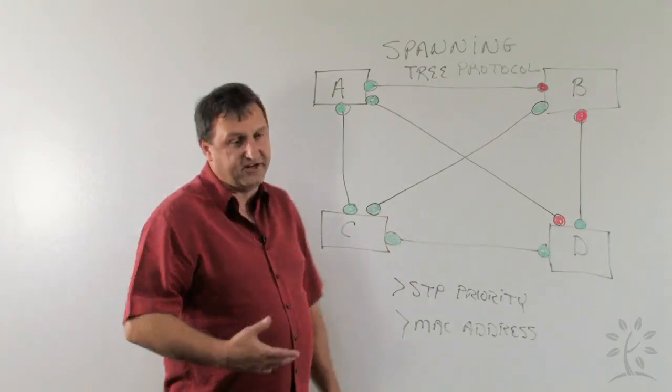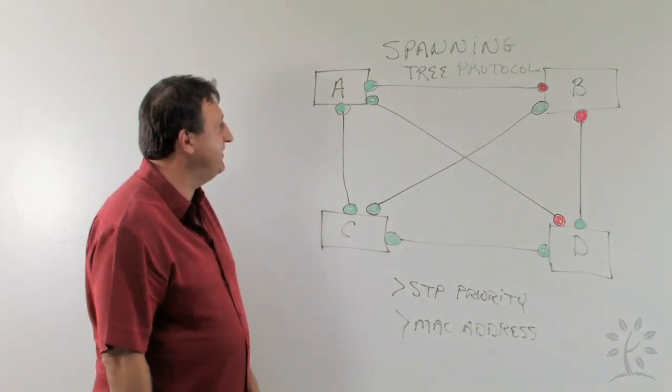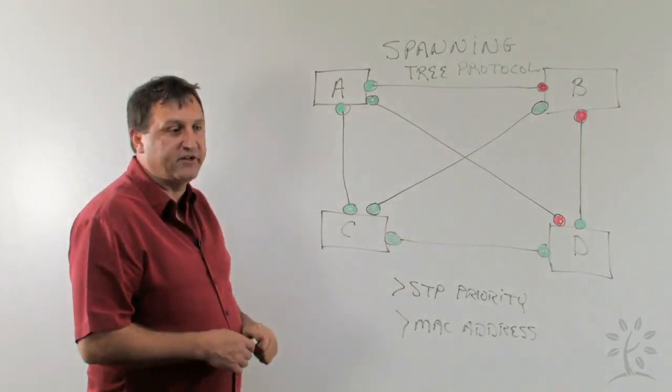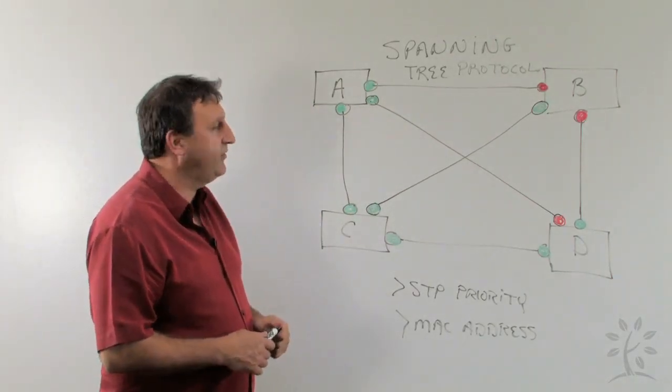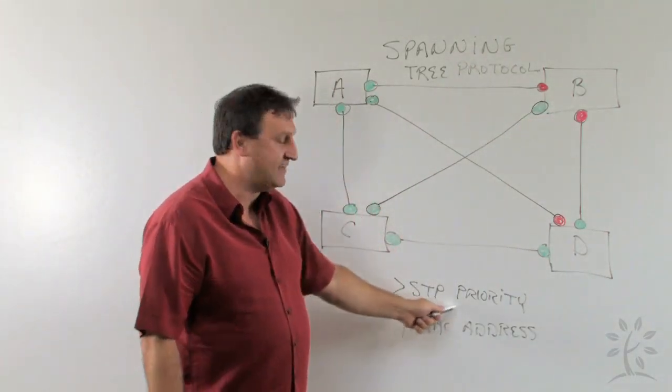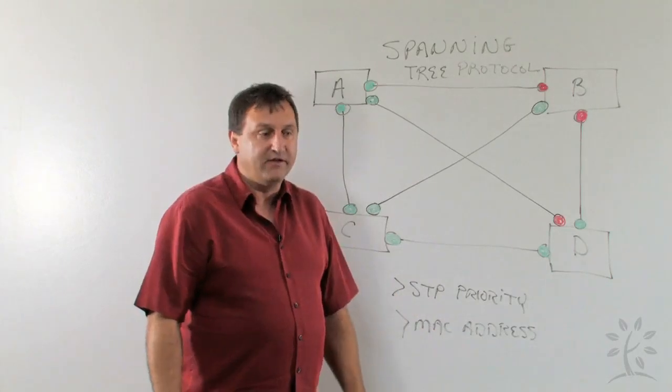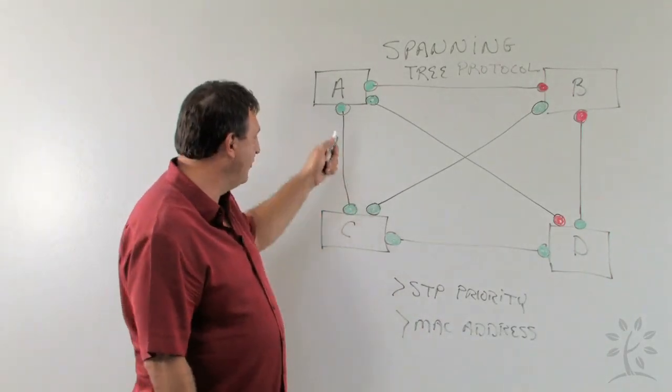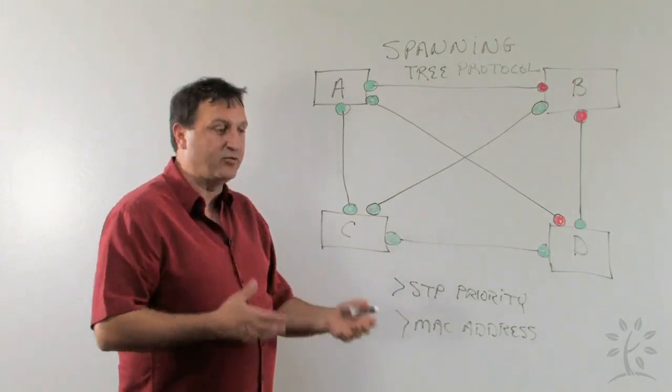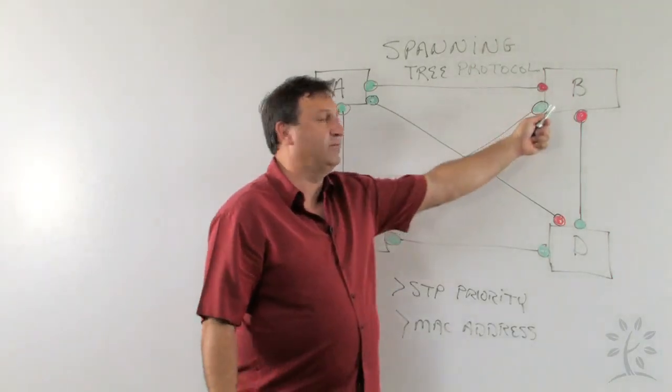And we could go in and actually change these. Let's say that we wanted switch A or switch B to be the root switch. Well, how would we do that? Well, what we would have to do is go into, let's say, switch B. And we would have to actually go in and set the spanning tree priority. If we set the spanning tree priority so that it's lower than C, D, or A, an election process will occur and now it will become the root switch.